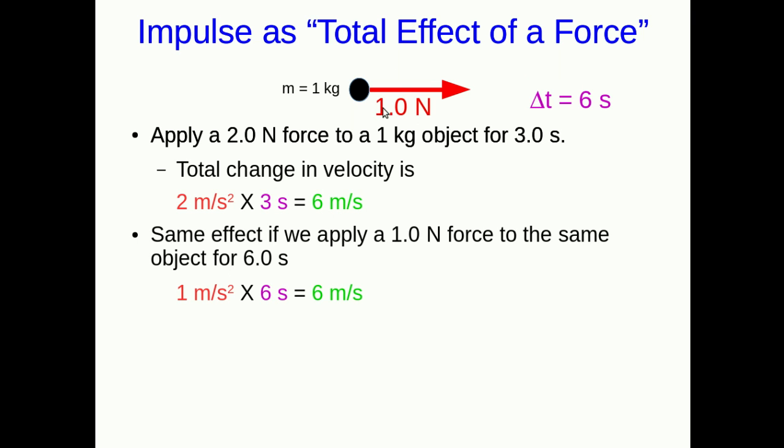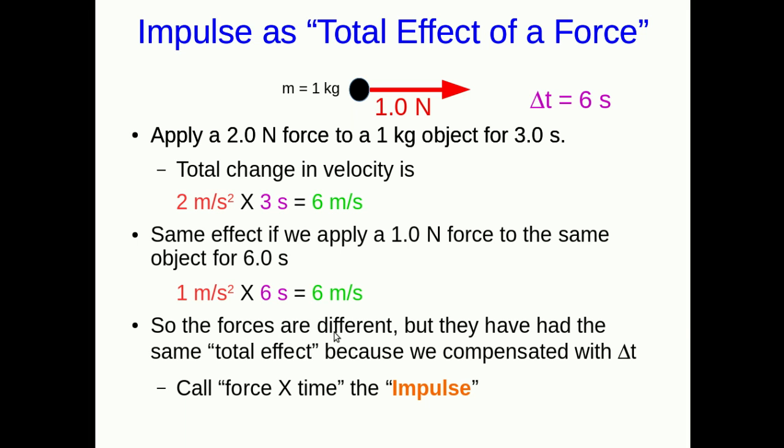Well notice that if we instead apply a 1.0 N force so that we get a 1 m/s² acceleration, we can get the same change in velocity if we just apply that force for 6 s instead of 3 s. So we've got the same net effect, the same total effect due to this force, a 6 m/s change in velocity on this 1 kg object. So even though the forces are different, they've had the same total effect because we compensated for the lower force by applying it for a longer time. So we're going to call this total effect, which is the force times the time, the impulse.